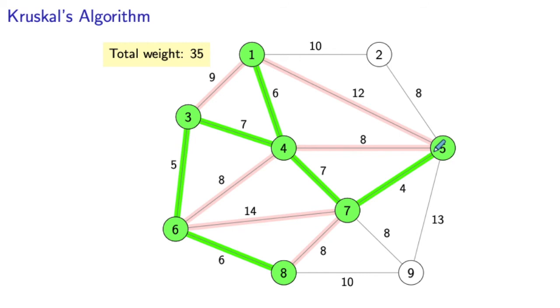The next cheapest or lightest edge would be of weight eight, and we see that there are several of these in the graph, but only two of them can still be included in our spanning tree. We already eliminated this one, this one, and this one.